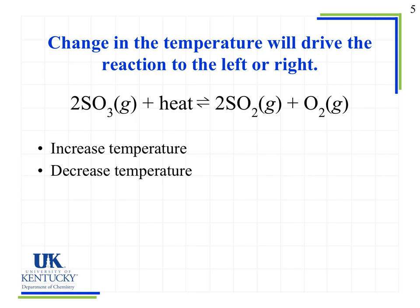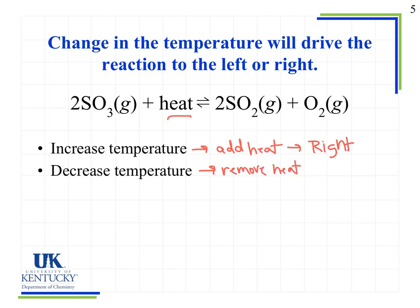Temperature changes will also affect whether a reaction shifts left or right. We look at where that energy is in the equation. Here, heat is on the left side as a reactant — this is an endothermic process. If I increase the temperature, that is the same as adding heat, which is the same as adding a reactant, so the reaction shifts to the right to consume the excess heat. If I decrease the temperature, that's the same as removing a reactant, and the reaction shifts to the left.